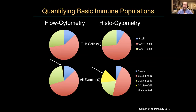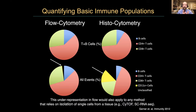This underrepresentation by flow applies to CyTOF, single-cell RNA-seq, and all these single-cell methods. We and others have done this type of quantification in various tissues under various conditions, and in almost all cases, myeloid and stromal components in particular are highly underrepresented in the data sets you get. The ground truth is not the single-cell methods most of you are familiar with — it's actually quantitative imaging.